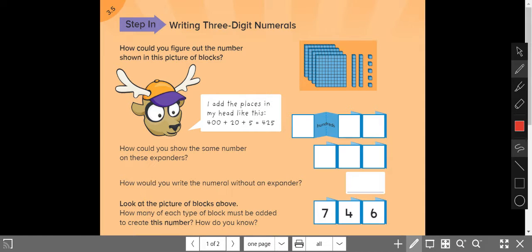How could we figure out the number shown in this picture? Monty Moose says, I add the places in my head like this: 400 plus 20 plus 5 is 425.